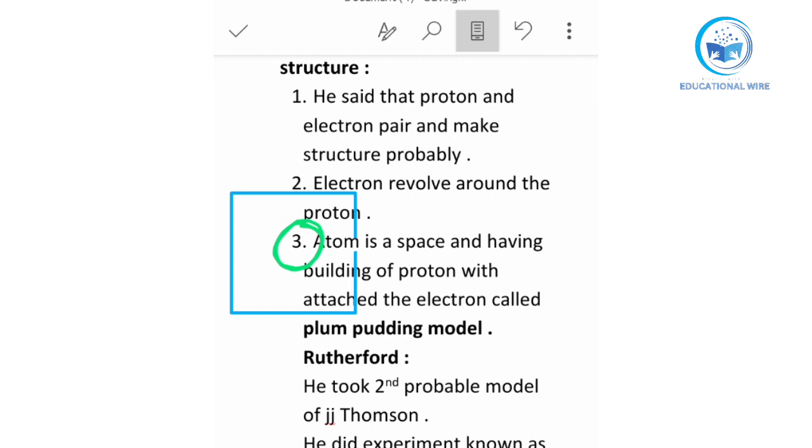After that, what he did, he put gold foil over here. He put gold foil over here. And after that he also put the zinc sulfate as a resultant. You can write over here gold foil. Now move further.